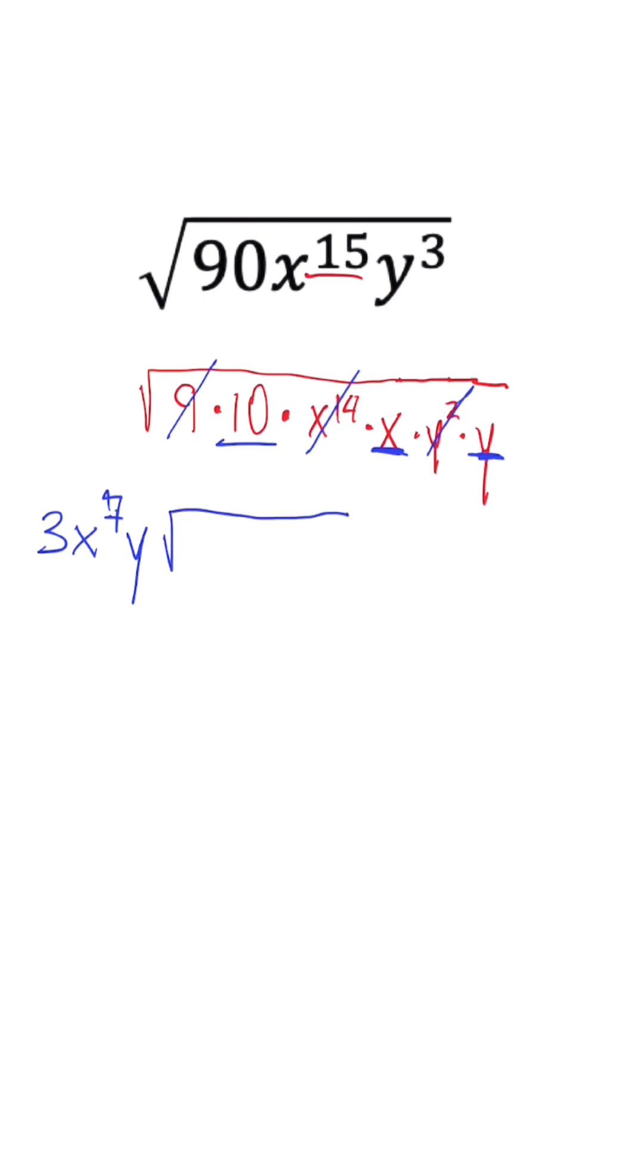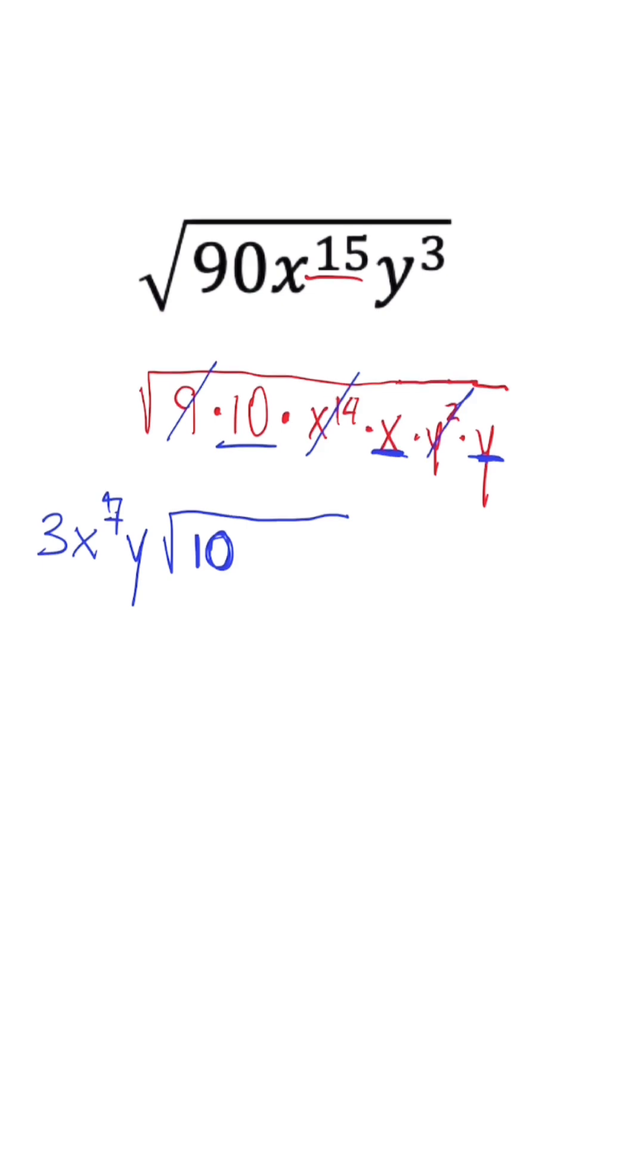So now when we think about this, we simplified everything that could come from under the radical, and what's left over is 10x times y. This would be our expression once we simplify our original radical.